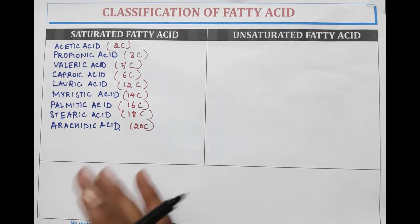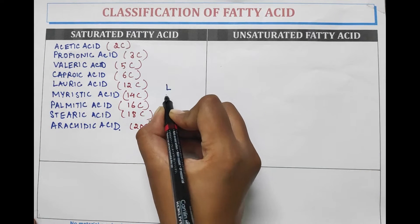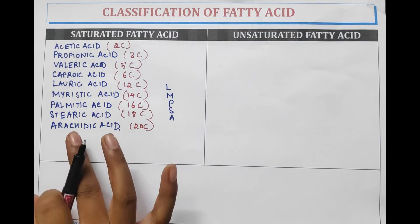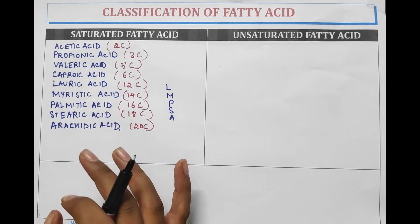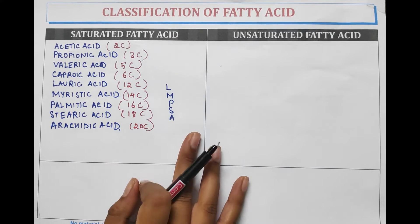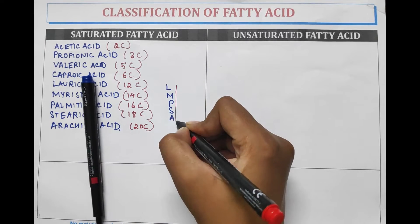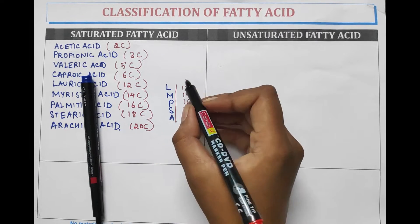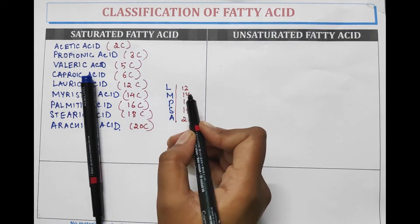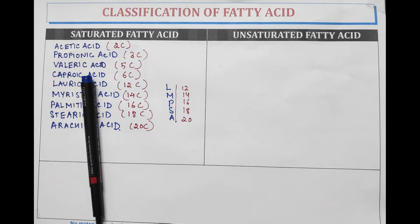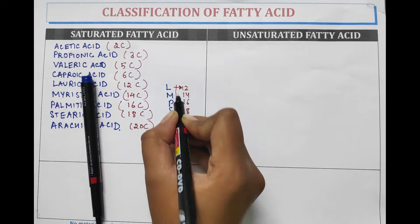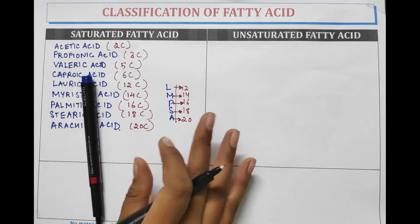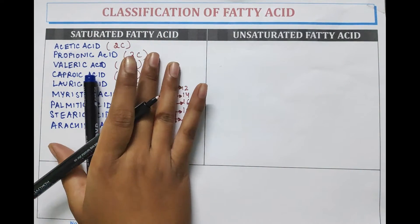A trick to remember these carbon atoms is L-M-P-S-A — standing for Lauric, Myristic, Palmitic, Stearic, and Erucic acid. The carbon atom numbers are 12, 14, 16, 18, and 20 — all even numbers with a gap of 2 between each. So lauric acid has 12, myristic 14, palmitic 16, stearic 18, and erucic acid has 20 carbon atoms. These were all about saturated fatty acids.